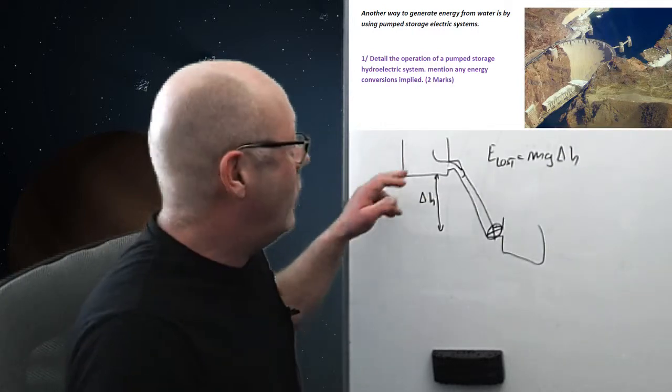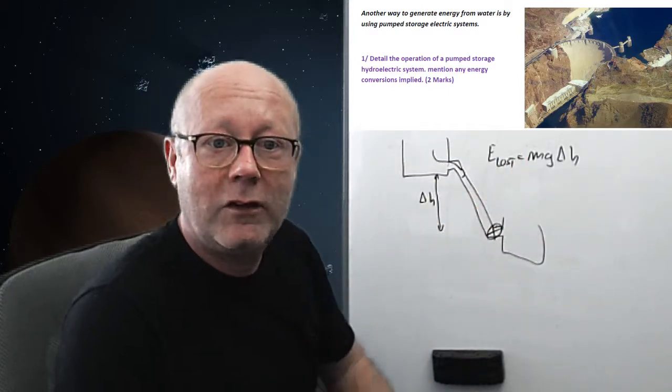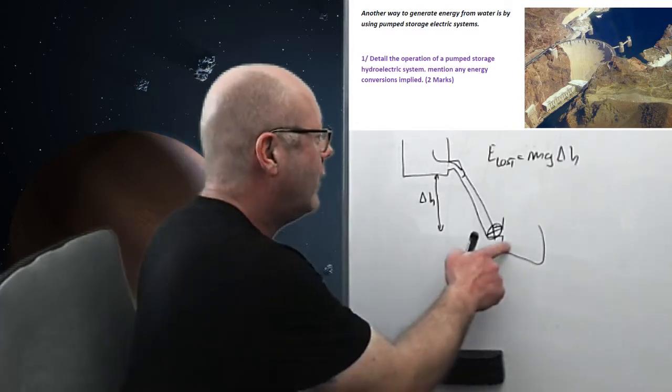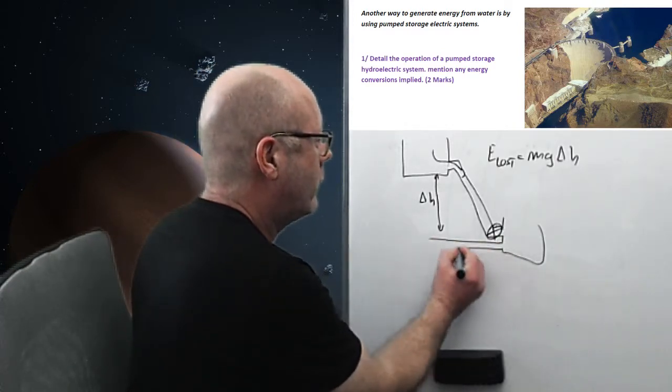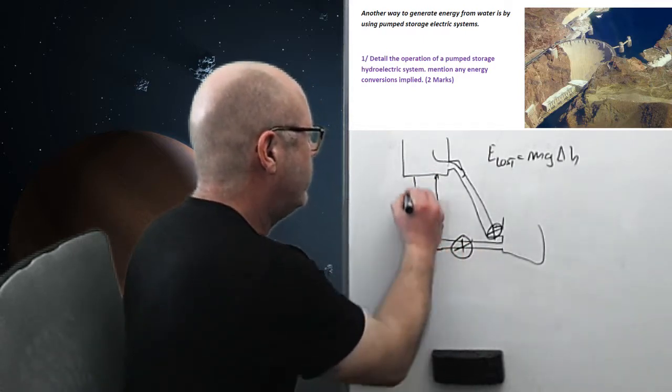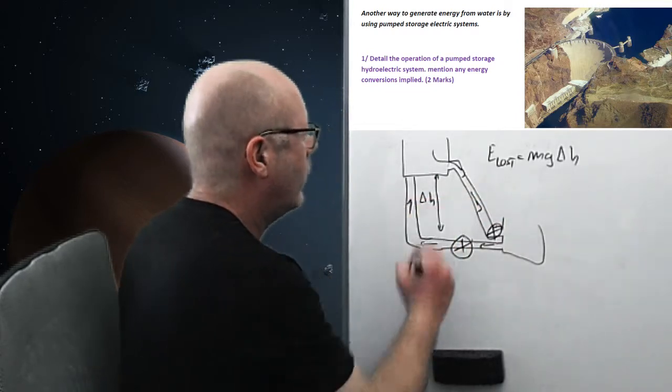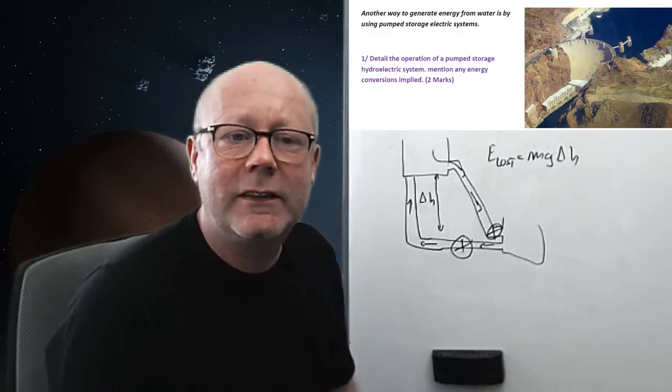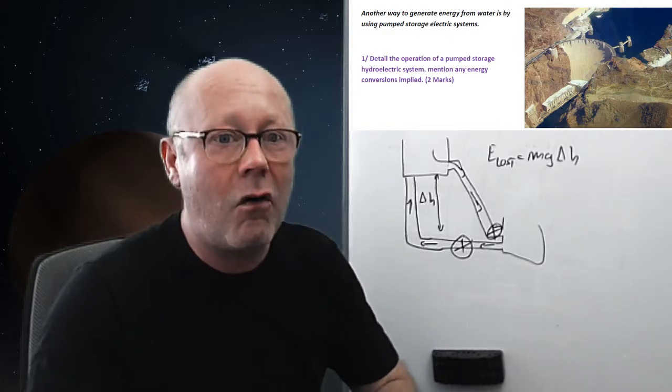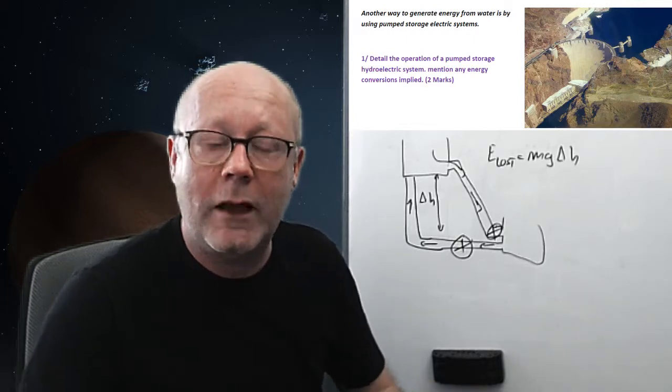So we saw that when you have water at a higher level, it falls, it loses gravitational potential energy, which is converted to electrical energy. So, in a pumped storage system, there's also another tube here, with a pump, that brings back the water up. So here the water goes down, here it would go up.